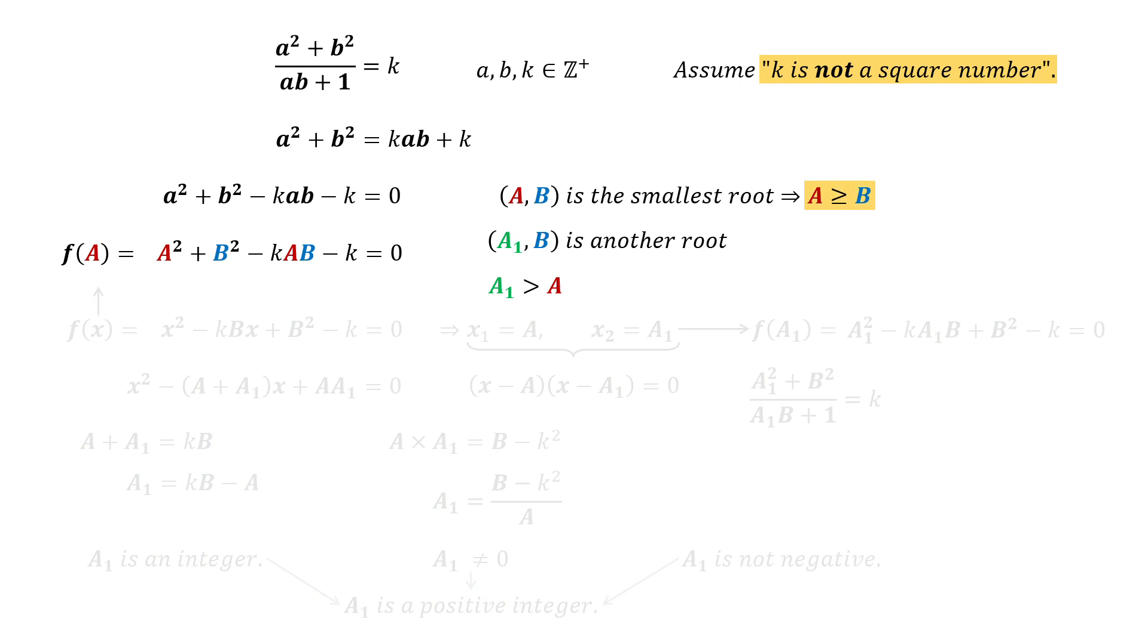But wait, because A is greater than or equal to B, then A square is greater than B square minus K. Dividing both sides of the inequality by A, we get A is greater than B square minus K over A. This expression is the same as A1, meaning A is greater than A1.